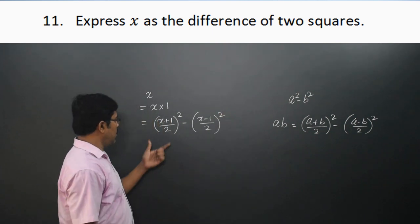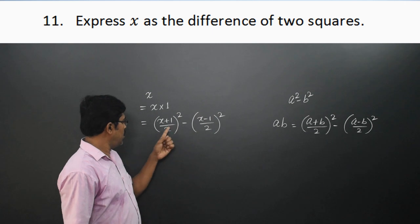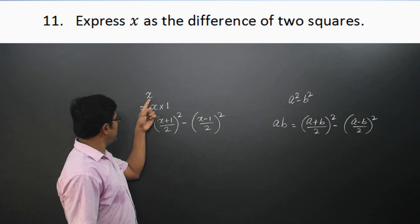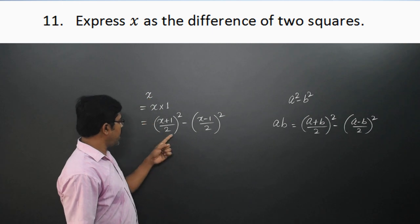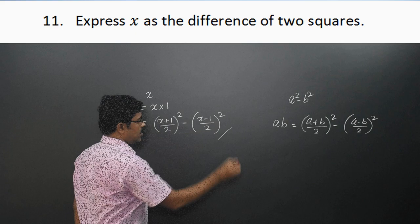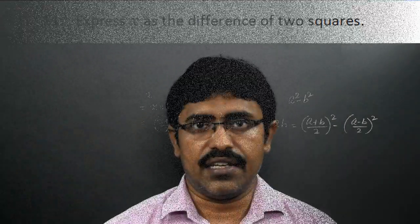This is of the form A² − B², so x is expressed as the difference of 2 squares. In the next lecture, some problems of exercise 12.2 will be solved.